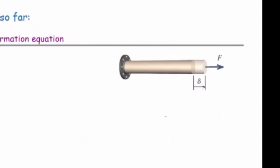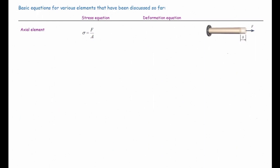For axial elements, which are elements subjected to force along their direction, we introduced sigma equal to F over A as the stress equation, and we introduced delta equal to FL over EA as the deformation equation. So we have two families of equations: stress and deformations.